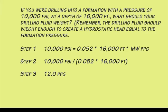So we restructure our equation to read: the formation pressure, which is 10,000 pounds per square inch, divided by .052 times 16,000 — the depth of our well — and we get an answer of 12.0 pounds per gallon.